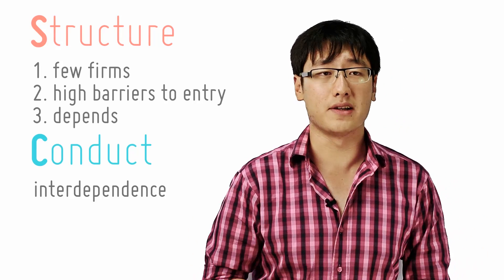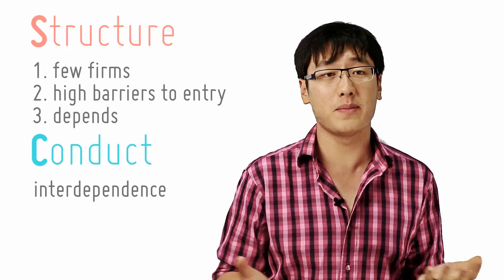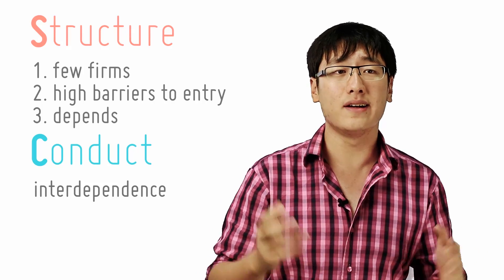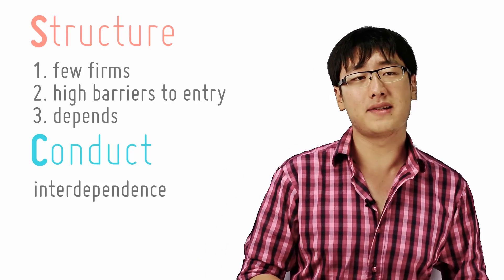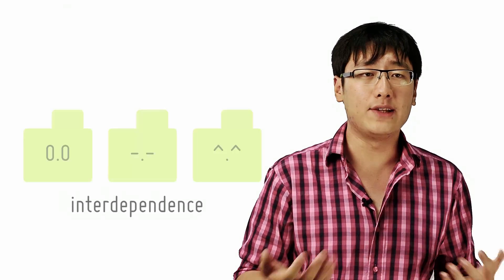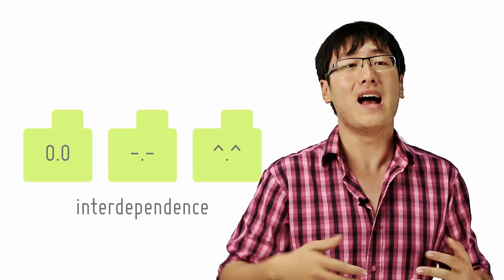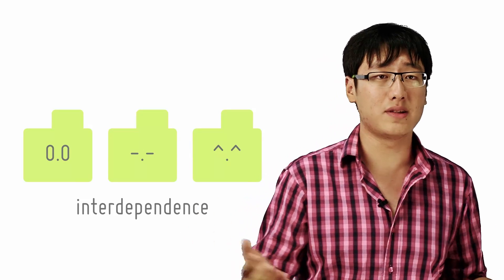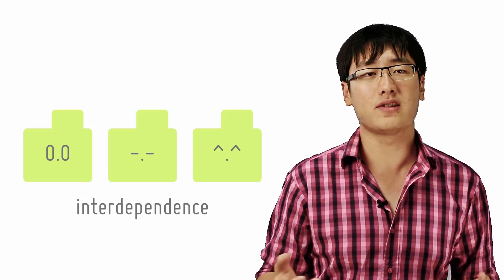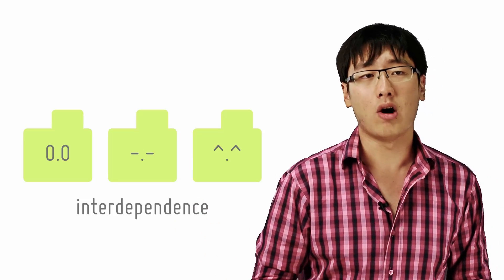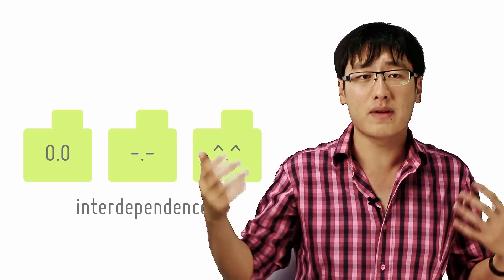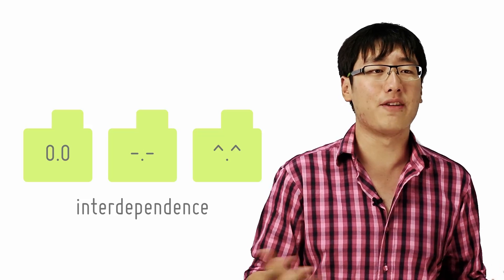These structural characteristics cause oligopolies to exhibit rather interesting behaviour — they are interdependent. Because there are only a few firms under oligopoly, each of them has to take account of others, meaning they are mutually dependent. Each firm is affected by its rivals' decisions. If a firm changes the price, the specification of a product, or the amount of advertising, the sales of its rivals will be affected. The rival may then respond by changing their price, specification, or advertising. So no firm can afford to ignore the actions or reactions of other firms in the industry.